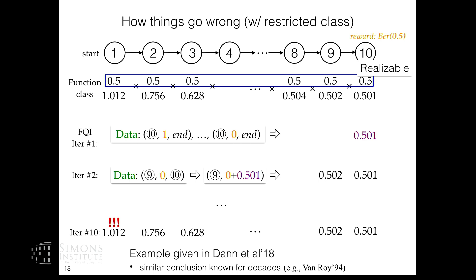This example was given with Chris Dan in a 2018 paper. Results of similar nature have existed for a long time — early work by Baird and Tsitsiklis has divergence examples of approximate dynamic programming — but this example is more intuitive and plain.